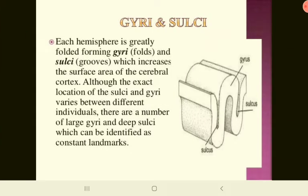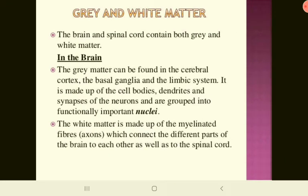Each hemisphere in the brain is greatly folded, forming gyri and sulci — gyri means folds and sulci means grooves — which increases the surface area of the cerebral cortex. Although the exact location varies between individuals, there are large gyri and deep sulci that can be identified as constant landmarks. The brain and spinal cord contain both grey and white matter. In the brain, grey matter is found in the cerebral cortex, basal ganglia, and limbic system; it is made up of cell bodies, dendrites, and synapses of neurons. The white matter is made up of myelinated fibers connecting different parts of the brain to each other and to the spinal cord.